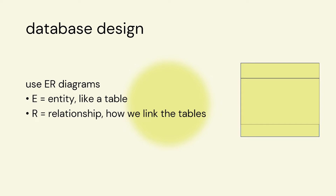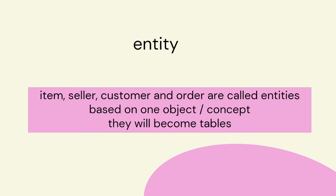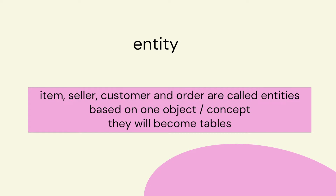We can think of an entity as a table. Ideas like item, seller, customer, and order are all entities — they're things based on one object or concept, and they will become our tables. In the real world, we have objects like people, students, books, items, and also concepts like event, class, lesson, subject, unit, department, transaction. These are the things that will become our tables.